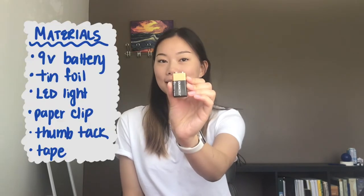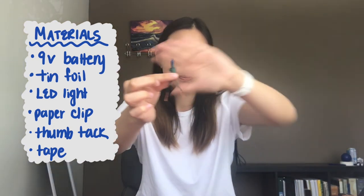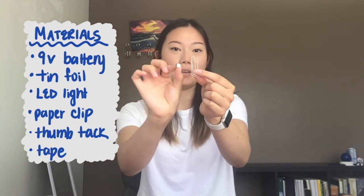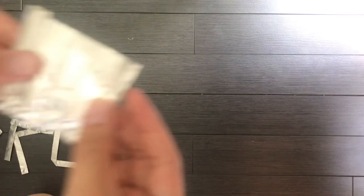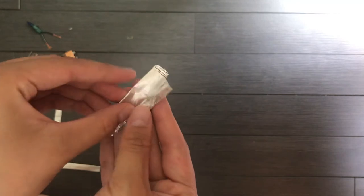For our first experiment, we're going to make our own circuits. What you're going to need is a 9-volt battery, some strips of tinfoil, a little LED light — or what I have here is just a Christmas light that I cut off — and then optionally a paper clip and a little thumbtack. I'm also going to be using some tape just to make sure our tinfoil doesn't move around. So first with your tinfoil, you're just going to fold it into little strips like this. Over here I just have a pile of pre-folded tinfoil.